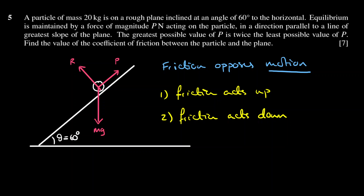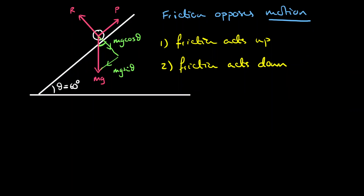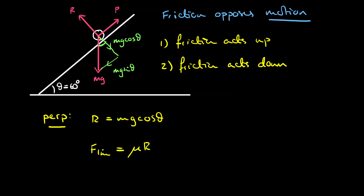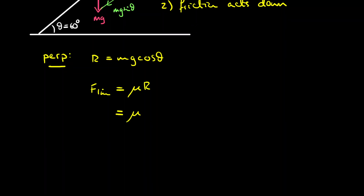Let's now resolve our forces, talking about components parallel and perpendicular to the plane. The weight has a component parallel to the plane of mg sin θ and perpendicular of mg cos θ — because this angle here is the same as the slope angle. Resolving perpendicular to the plane, we have equilibrium, so R = mg cos θ. And because we've found the normal reaction force, we can find the limiting value of friction, which equals μ times R, in other words μ mg cos θ.